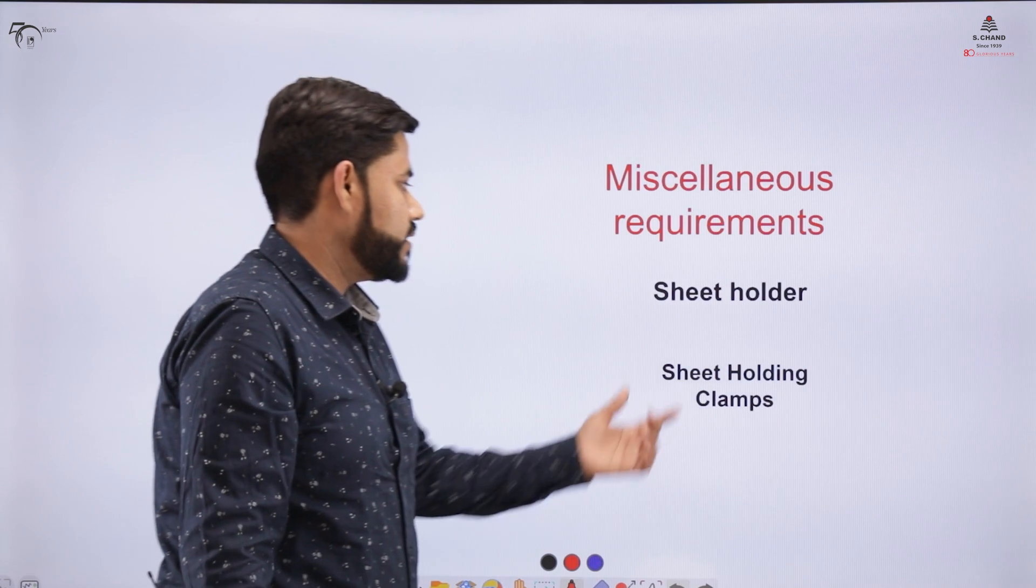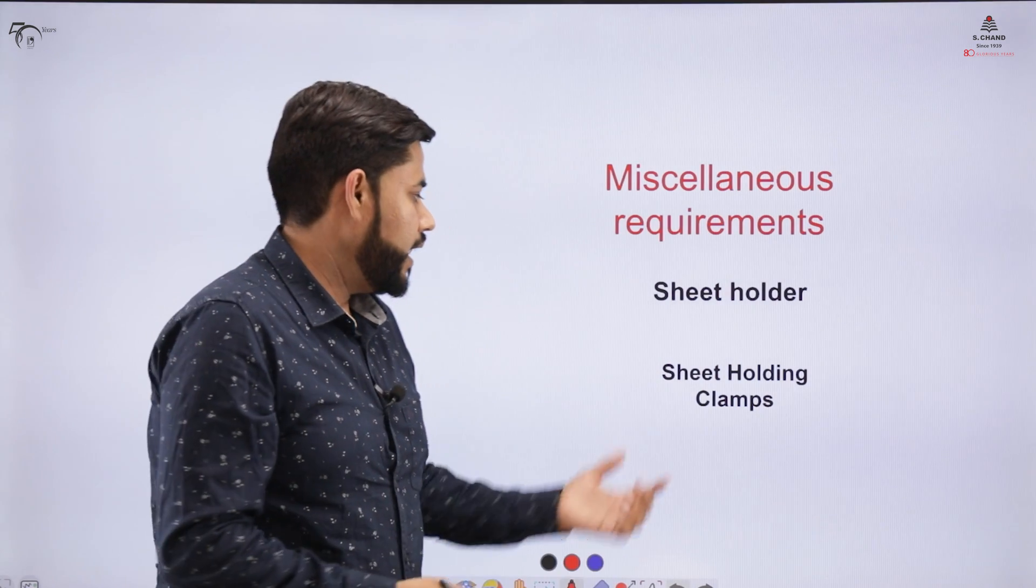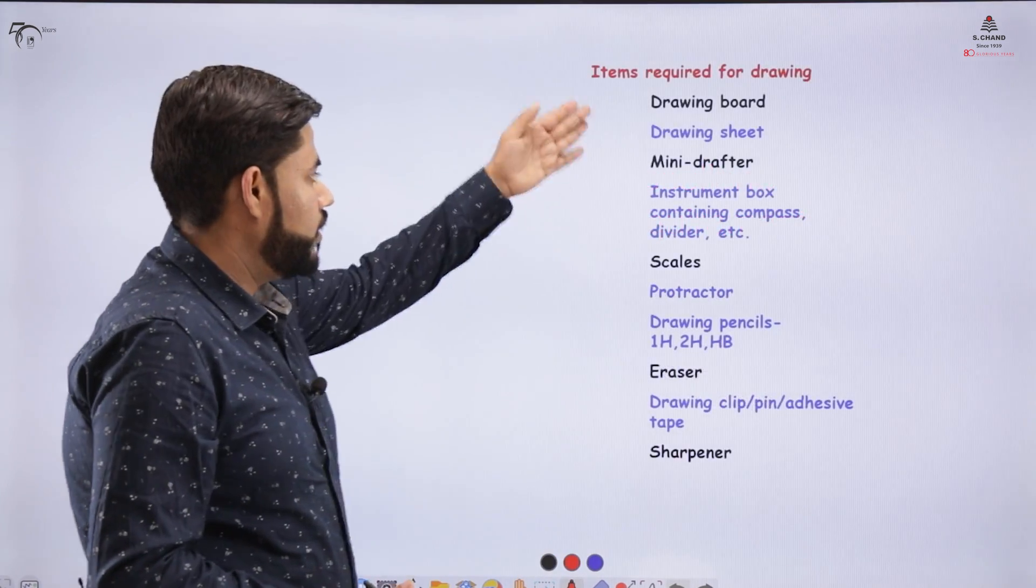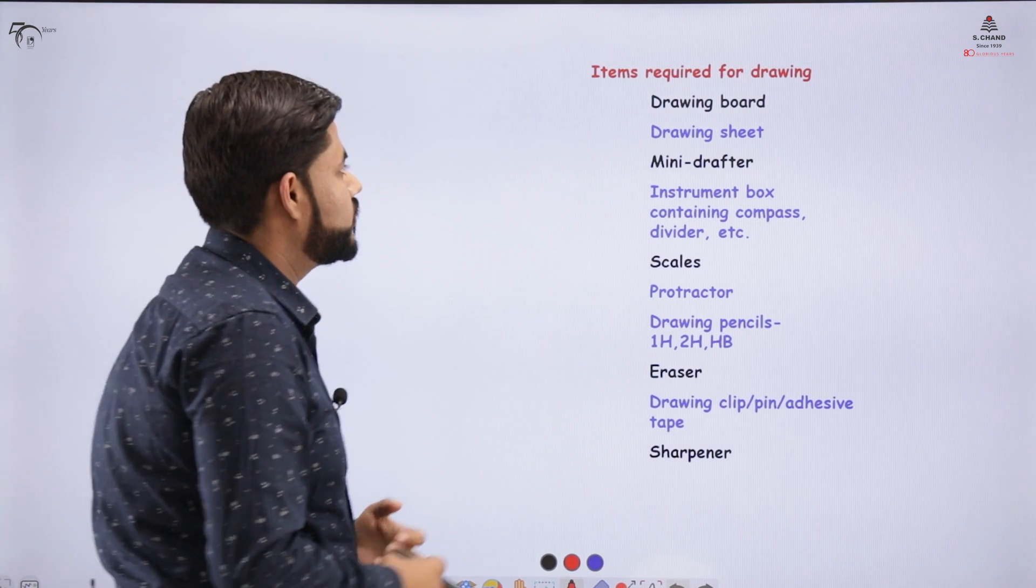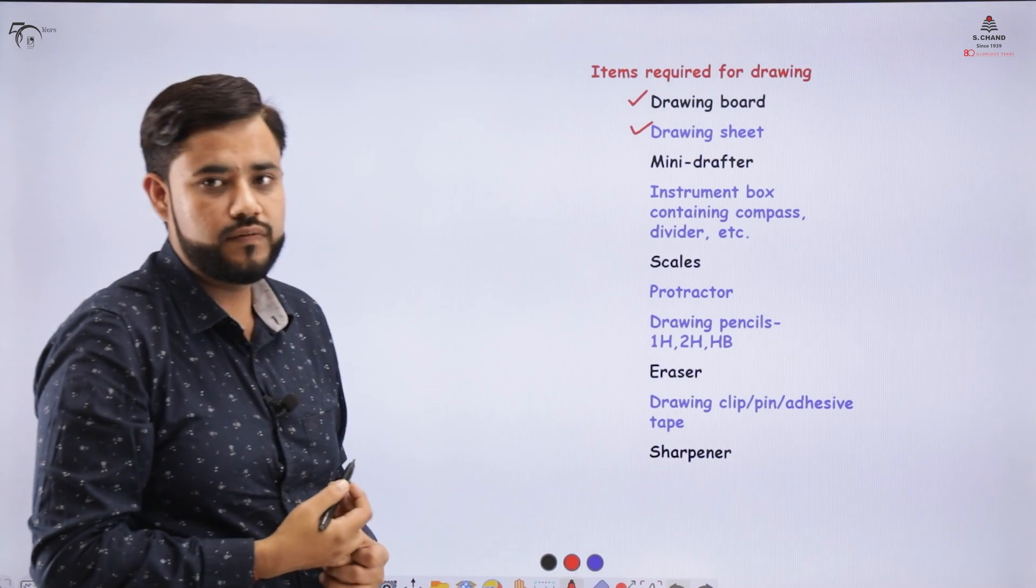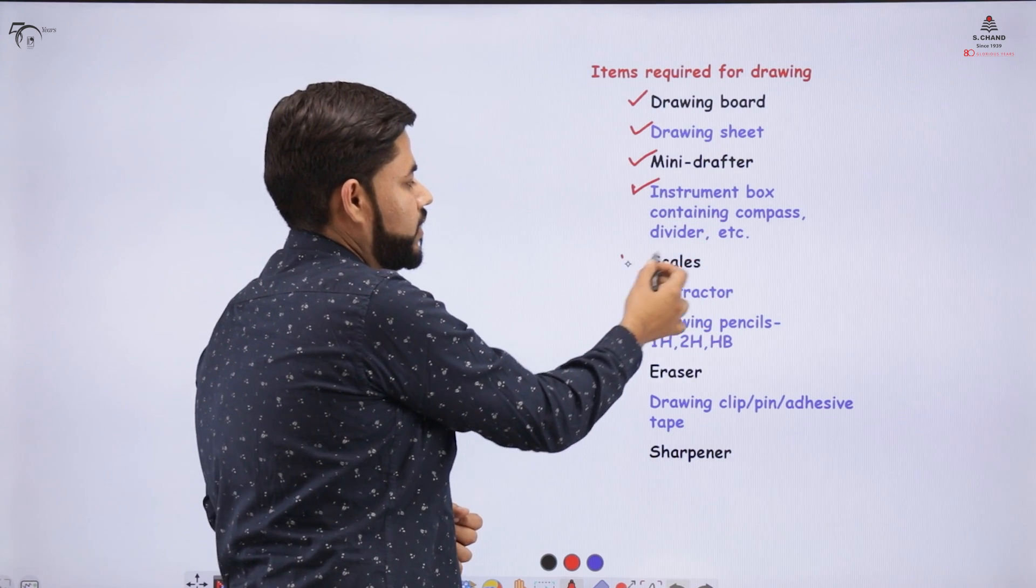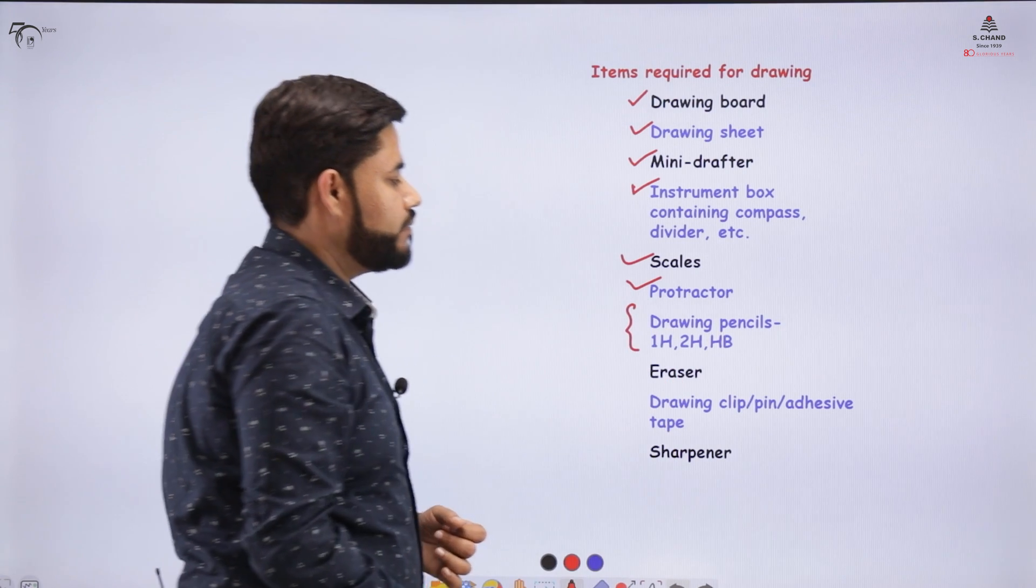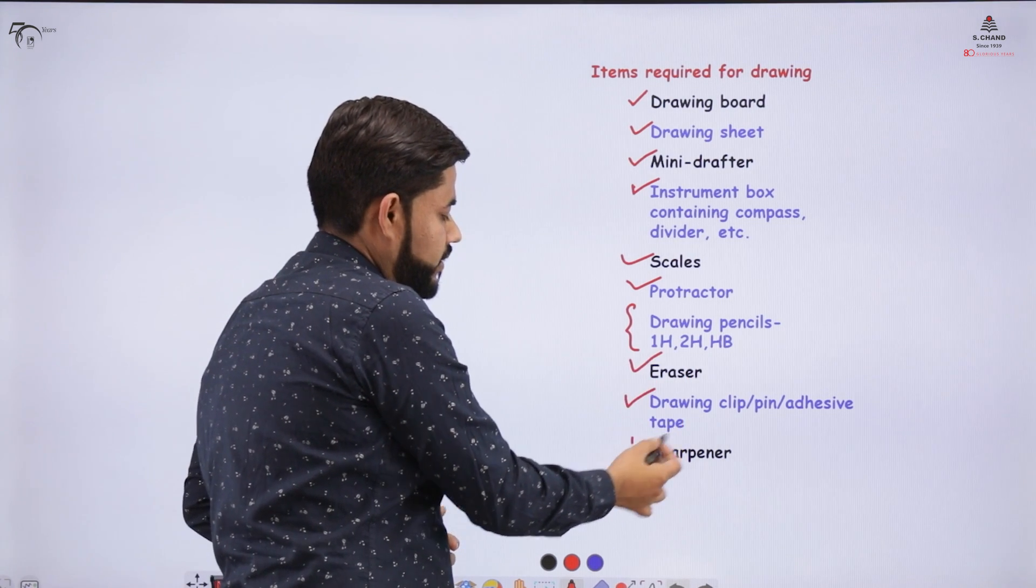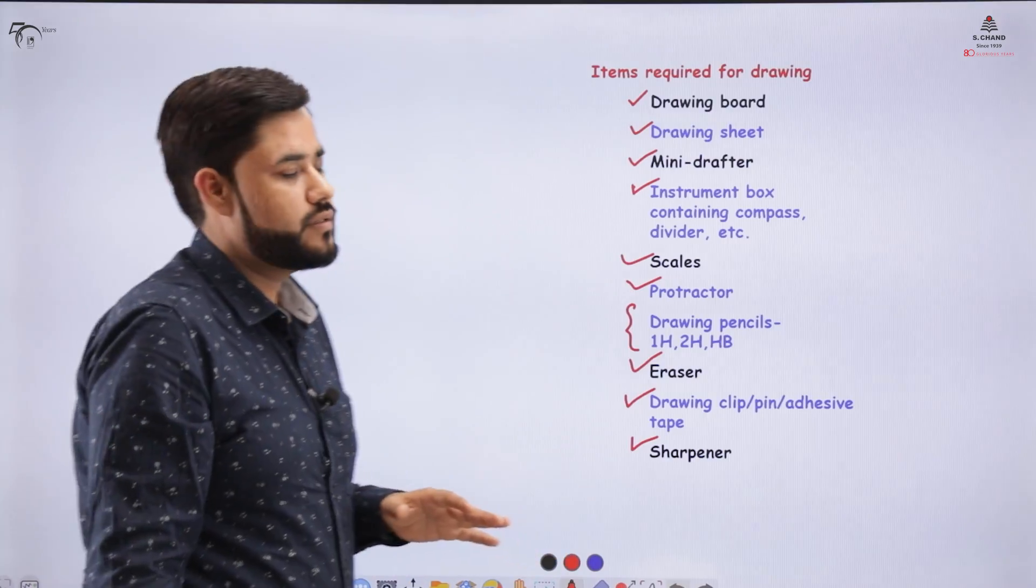There are certain miscellaneous requirements: the sheet holder and sheet holding clamp. The sheet holder is an equipment in which you place your sheet and the clamps are used to tighten the sheets with the board. Overall list of equipment: drawing board, drawing sheet, mini drafter, instrument box that consists of compass, divider, scales, protector. Then you need pencils which are 1H, 2H or HB pencils. Then eraser, drawing clips and a sharpener for making the objects in this engineering drawing course.